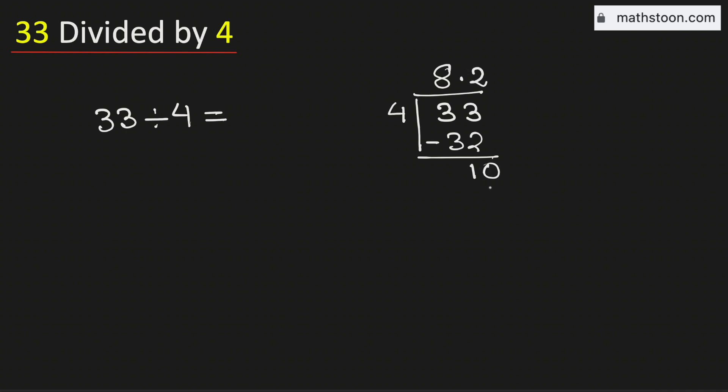Now 4 times 2 is 8. Subtract, we get 2. Now 2 is less than 4. That is why we will again borrow 1, 0.